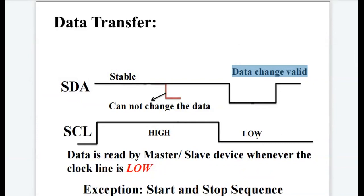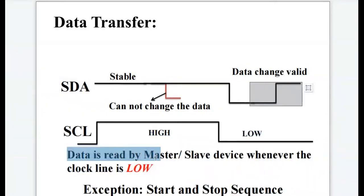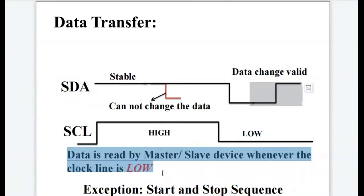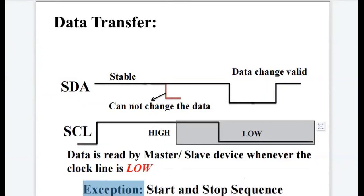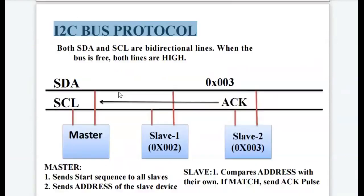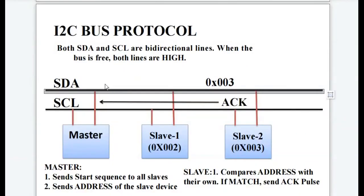In data transfer, data change is valid only when the clock is low. Data is read by the master or slave device whenever the clock line is low. This is the exception related to the start and stop sequence. There are two lines: SDA (serial data line) and SCL (serial clock line).